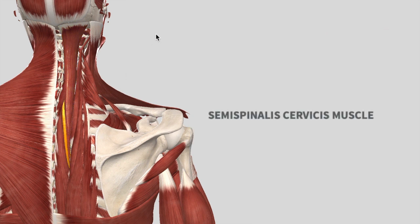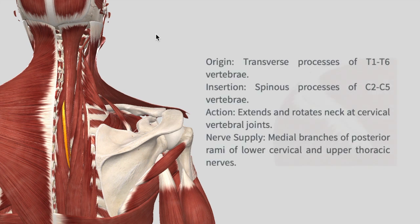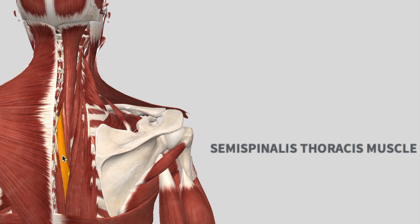Next we have the semispinalis cervicis muscle — same functions, with the origin slightly lower this time starting from T1 to T6, and it inserts into the spinous process of C2 to C5. Again, it extends and rotates the necks of the cervical vertebral joints.